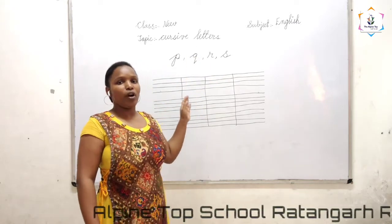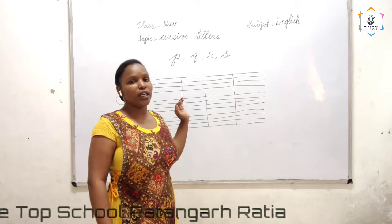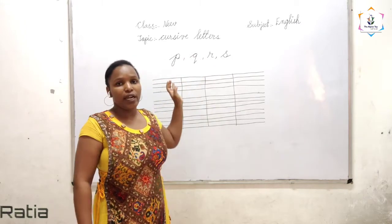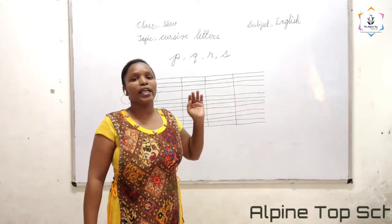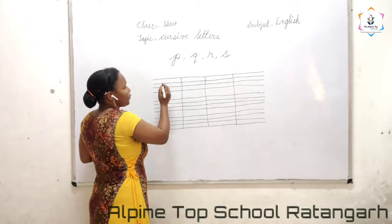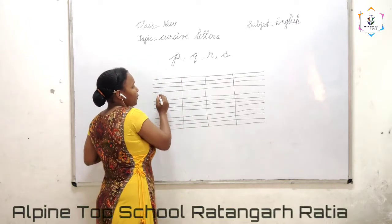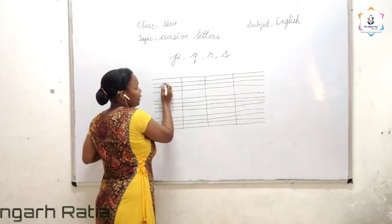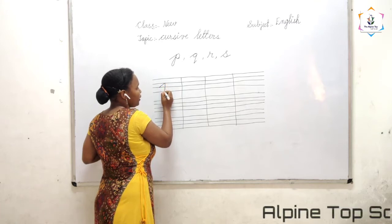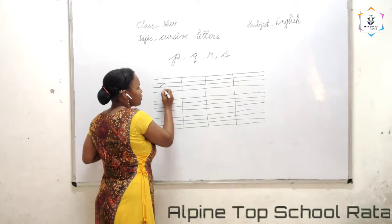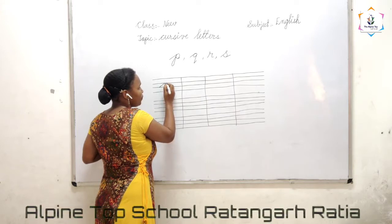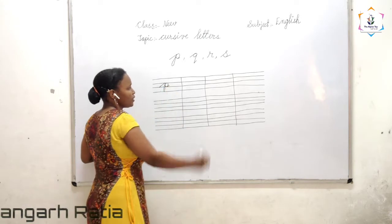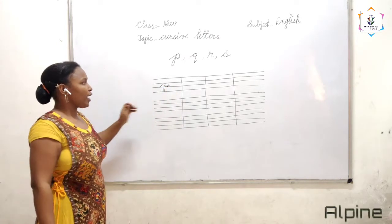As I told you before, all cursive letters start from the third line. This also starts with the third line, and you have to make a slant line. First we are going to write P. From the third line, make a slant line, then come down with a standing line. Then take a turn like this, go touch it up — it will curve. Then touch here in the middle, then come back. This is P.